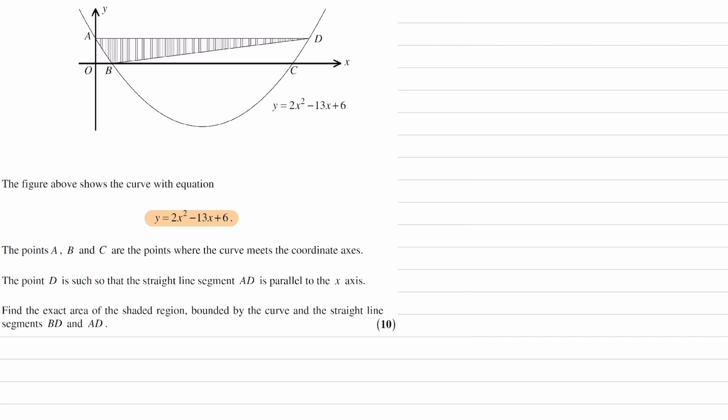Point D is such that the straight line segment AD is parallel to the x-axis. So that's this line here. This line is parallel to the x-axis. And then we're trying to work out the area of the shaded region bounded by the curve, the straight line, the segments BD and AD, which is basically this shaded bit here.